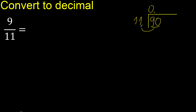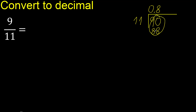90 is not less, so with 90: 11 multiplied by which number is nearest to 90 but not greater? 11 multiplied by 9 is 99, which is greater. 11 multiplied by 8 is 88. Subtract: the remainder is 2.